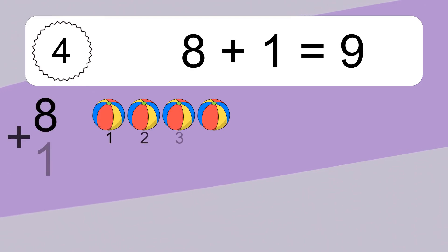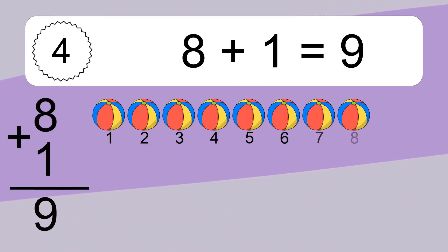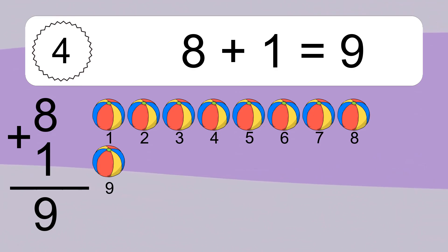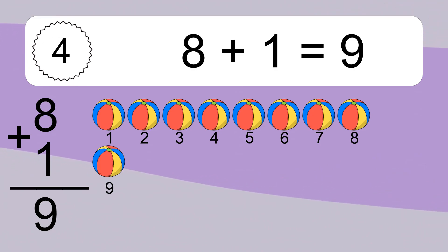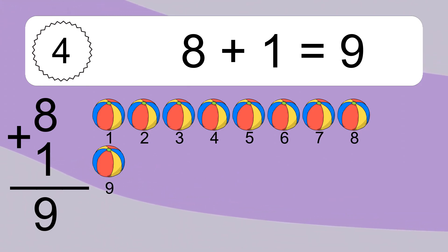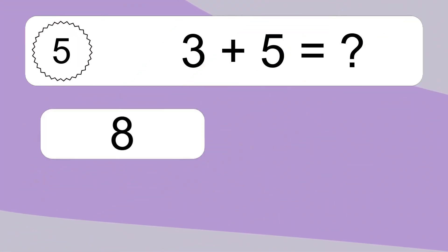8 plus 1 equals what? 8 plus 1 equals 9. Let's count it. 1, 2, 3, 4, 5, 6, 7, 8, 9.